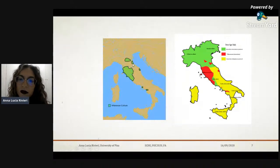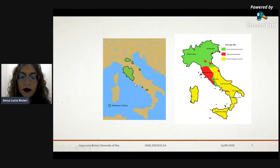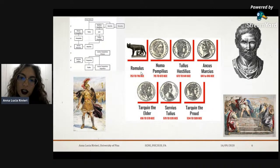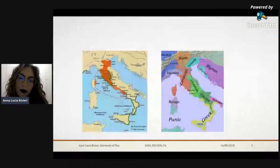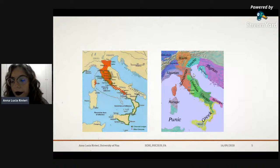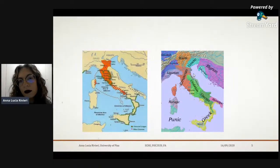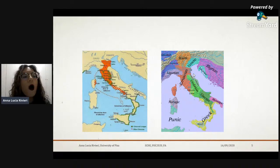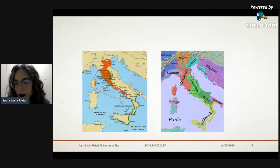The Etruscan language is not of Indo-European origin — it is non-Indo-European, which is also very interesting for the study of the origin of that society. The Etruscan society can chronologically be placed in the last phase of the Iron Age in Italy, from the ninth century before Christ up to the first century before Christ.